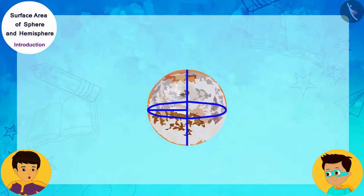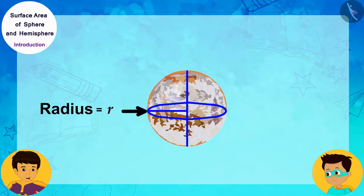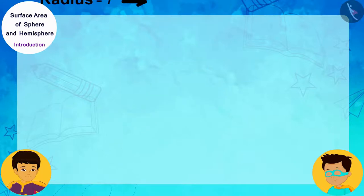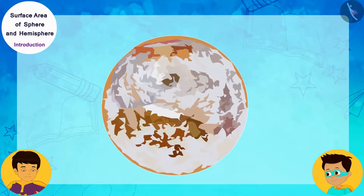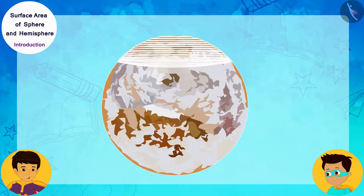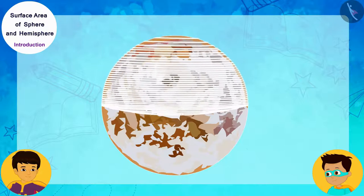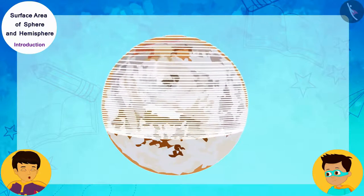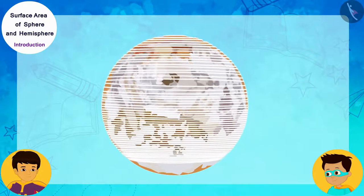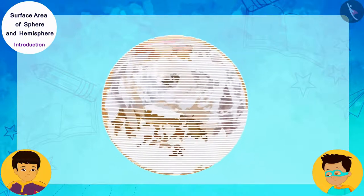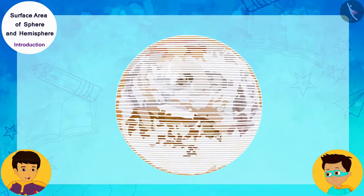Suppose the radius of this spherical sweet is R. Now, imagine if we wrap a string on this sphere in this way and keep wrapping it on the sphere till it covers the sphere completely.